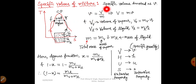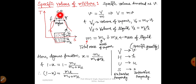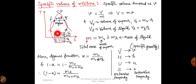Specific volume is basically denoted as small v. We can write it as v = Volume / Mass, and volume = mass × specific volume. Here, this is our critical point where the saturated liquid line and saturated vapor line converge. This bottom portion is our volume of liquid and mass of liquid, and the dotted top portion is our volume of vapor and mass of vapor.